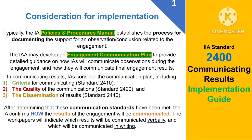In communicating results, the internal auditors consider the communication plan, including the criteria for communicating, the quality of the communications, and the dissemination of results. After determining these communication standards have been met, the internal auditor confirms how the results of the engagement will be communicated. The work papers will indicate which results will be communicated verbally and which will be communicated in writing.